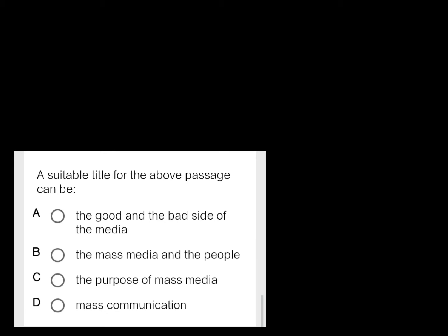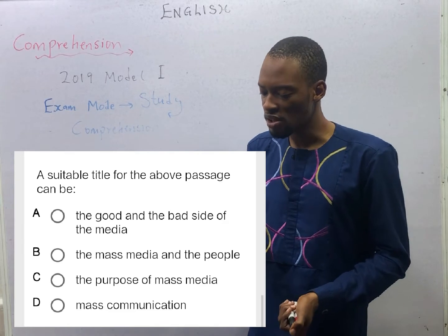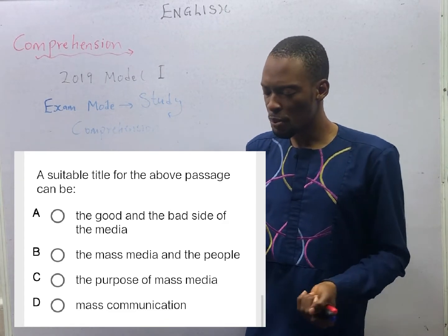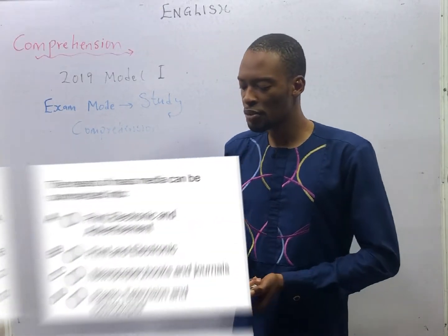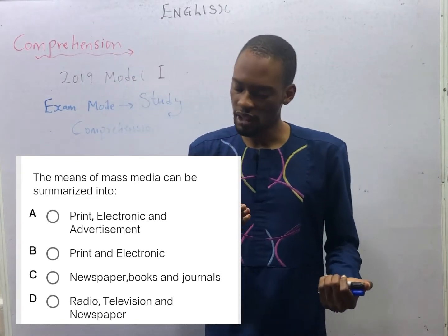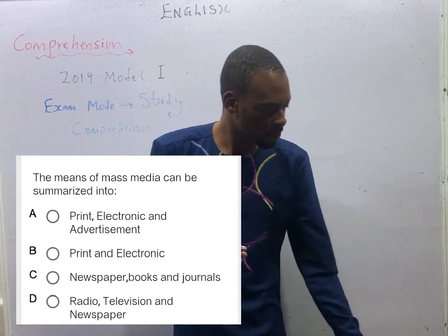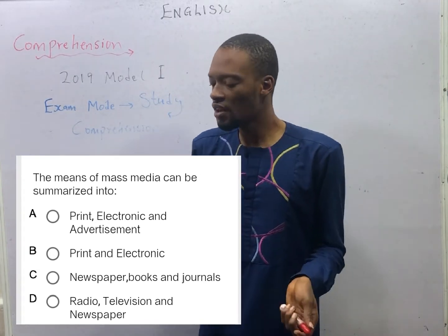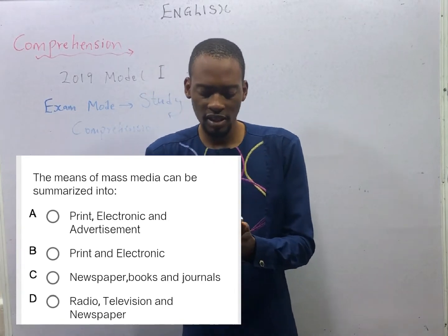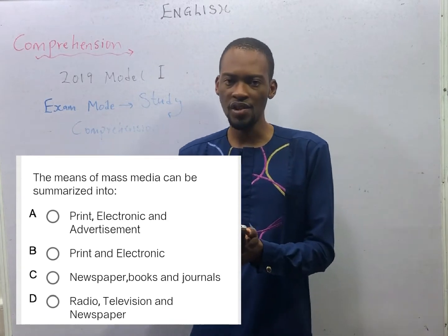The first option A is the good and the bad side of media. Option B, the mass media and the people. Option C, the purpose of mass media. And option D, mass communication. So, what is the passage trying to tell us? The next question: the means of mass media can be summarized into dash. It means the passage gave us the means of mass media. Option A says it can be summarized into print, electronic and advertisement. Option B, print and electronic. Option C, newspaper, books and journals. Option D, radio, television and newspaper.